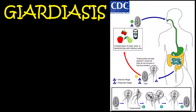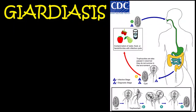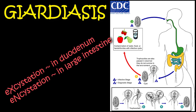Giardiasis is acquired by ingestion of infective cysts from contaminated food, drink, fingers, etc. Following ingestion, a cyst opens up in the duodenum to release a trophozoite. The trophozoite attaches to the intestinal wall by a sucking disc for nourishment and multiplies by binary fission.